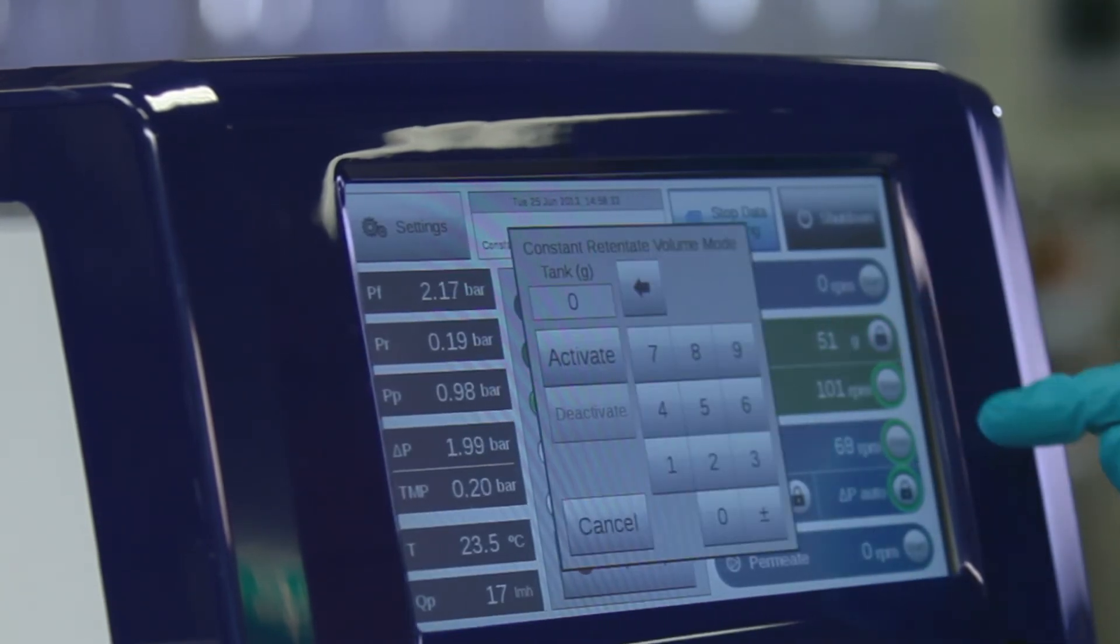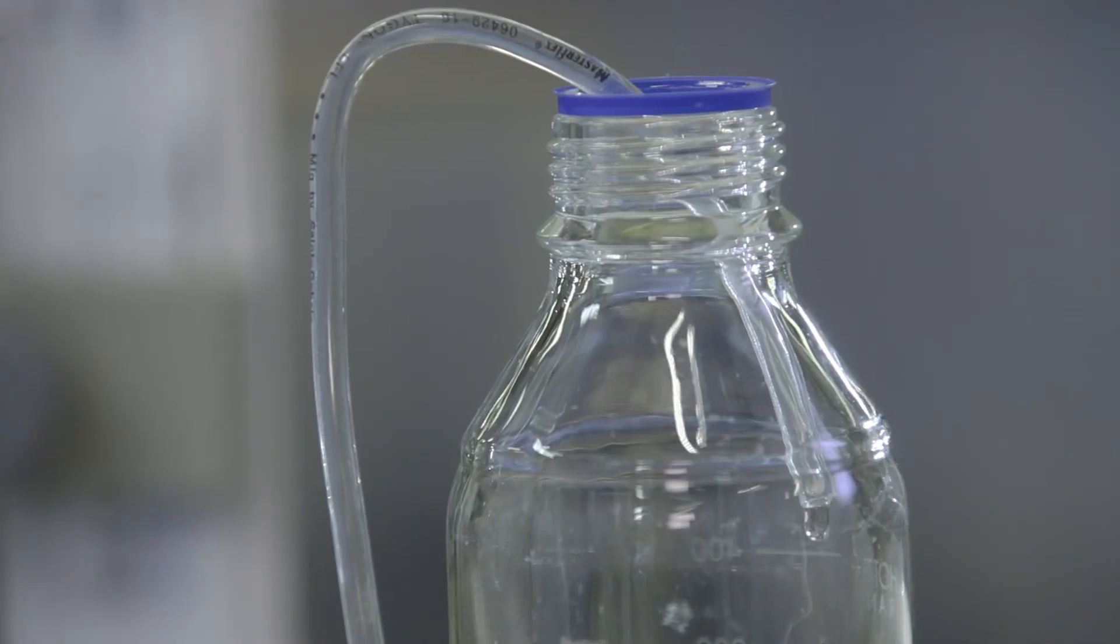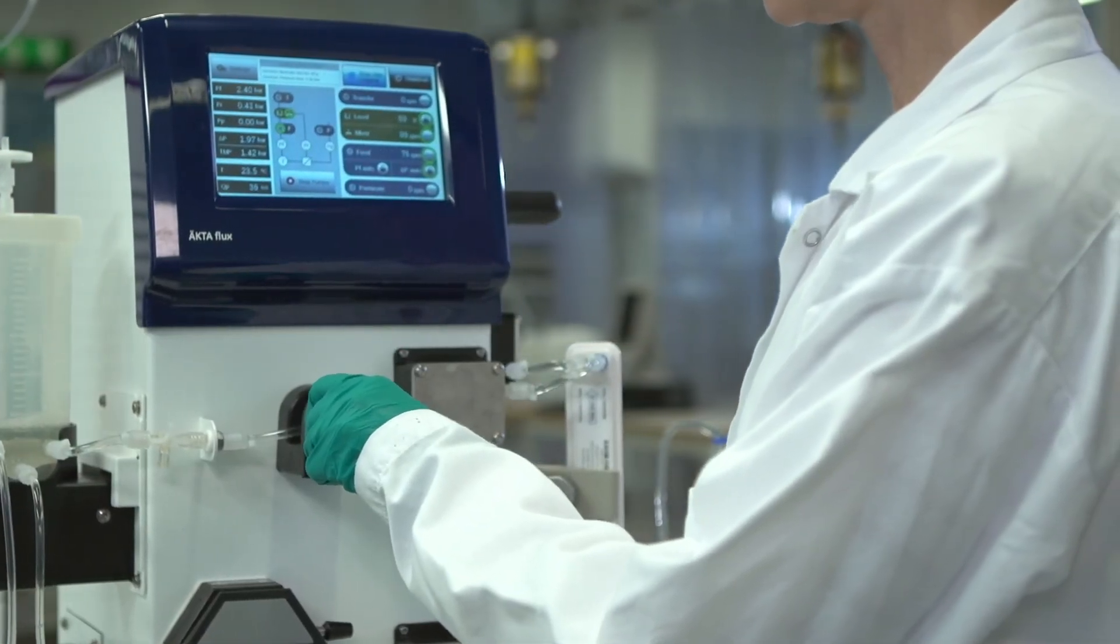Set constant retentate volume. Open the permeate valve. Set transmembrane pressure using the manual retentate valve.